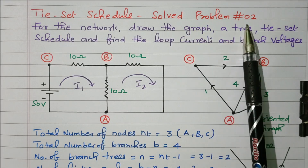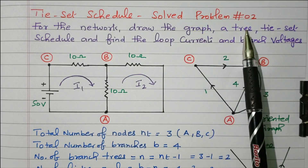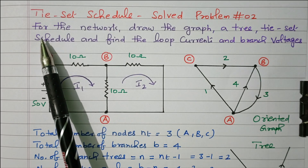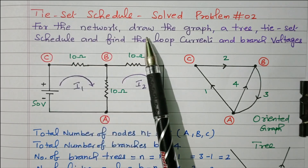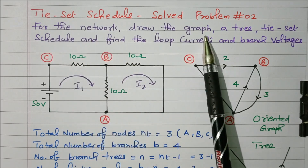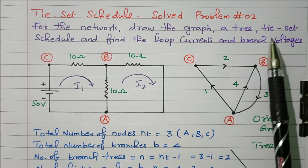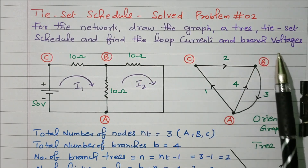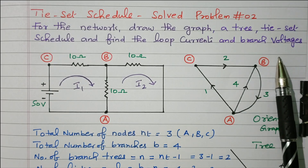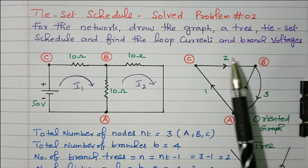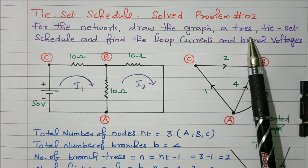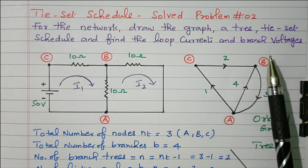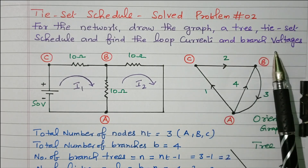Tie set schedule, solved problem 2, coming under the network topology. First we will see the statement of the problem. For the given network, draw the graph, tree, tie set schedule, and find the loop current and branch voltages. We need to find the loop current and branch current.